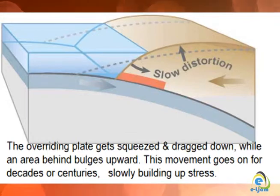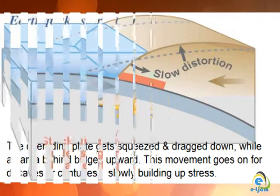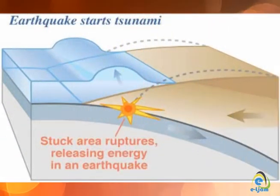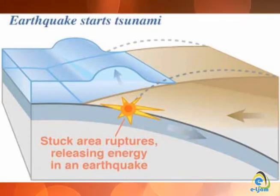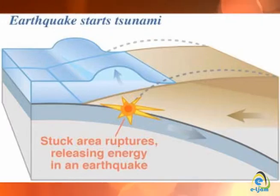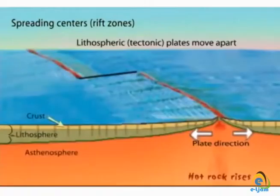During convergent and transform plate boundary action, the place where the compression and slippage of the rock occurred is called the epicenter of the earthquake. This point is called the focus, and seismic waves radiate or spread out in all directions from this center.